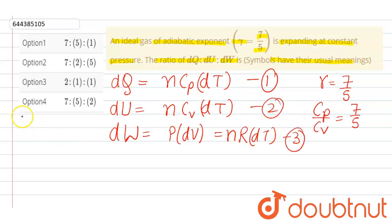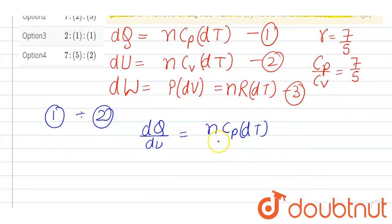Now we divide first equation by second equation, and we get dQ upon dU will be equal to nC_p dT divided by nC_v dT. Cancelling dT with dT, n with n, we get 7 upon 5.